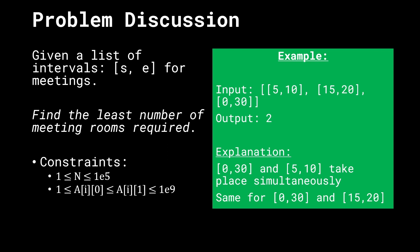Let's take an example to understand this better. The input we get is [5, 10], [15, 20], and [0, 30]. We have three different meetings: the first meeting starts at t=5 and ends at t=10, then there's another meeting starting from 15 ending at 20, and a third meeting starting from 0 ending at 30.